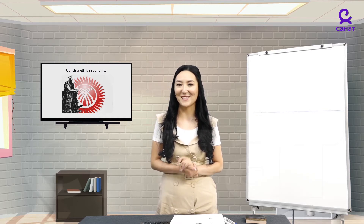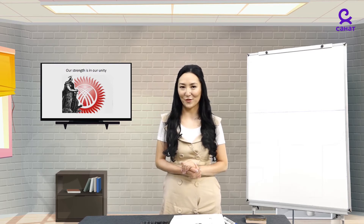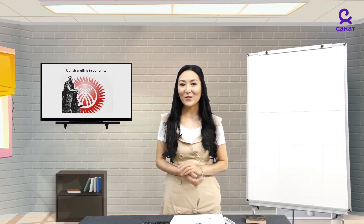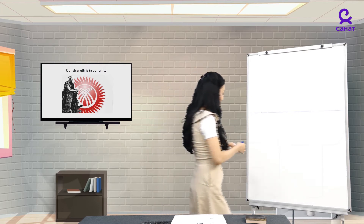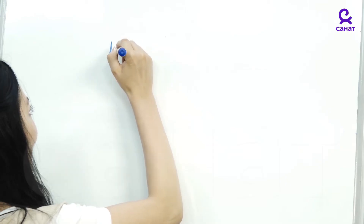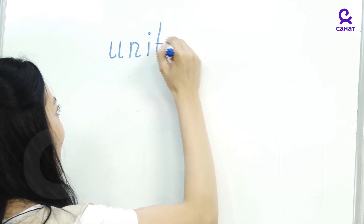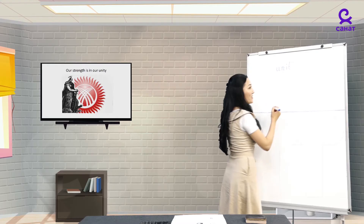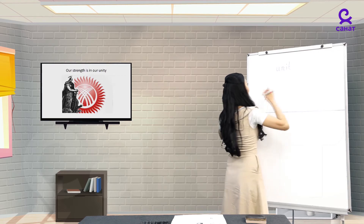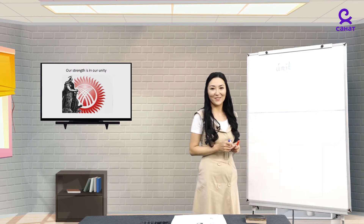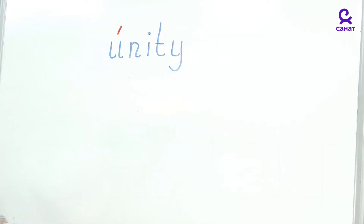No. When you make plans together, are you in unity? Yes. Now, repeat this word after me: Unity. Unity. Okay. How do we spell this word? U-N-I-T-Y. Unity. Where is the stress? Unity. Which part of speech is it? Correct, it's a noun.